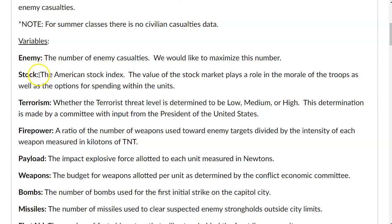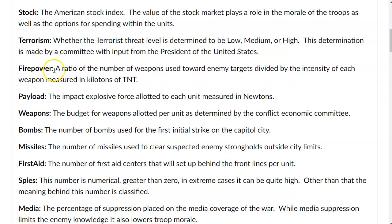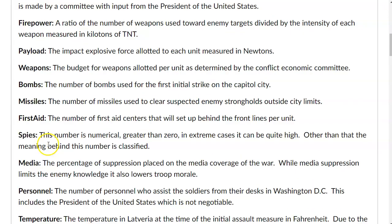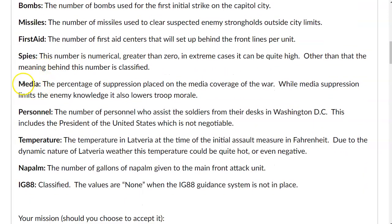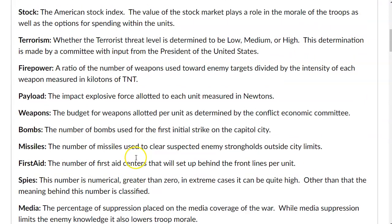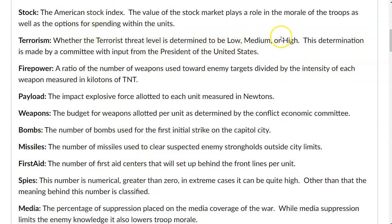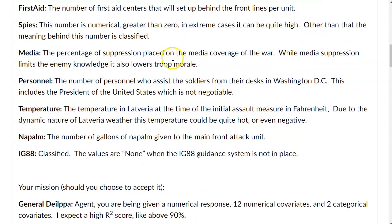What variables do we have? We have the stock index and the terrorism level and firepower, which is different than payload, and the number of weapons and bombs and missiles and first aid stations, and how many spies, the amount of media suppression, how many personnel and temperature, napalm, and IG-88 is classified. So you don't know what that is, but it's a categorical variable. It's either none or installed. There's another categorical variable, peer terrorism. It can either be low, medium, or high. So those are the two categorical variables in the dataset.